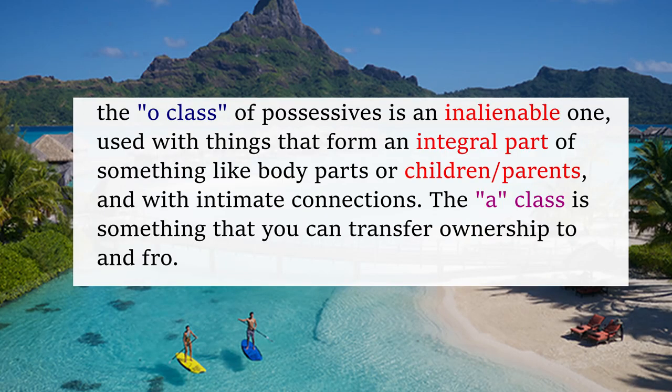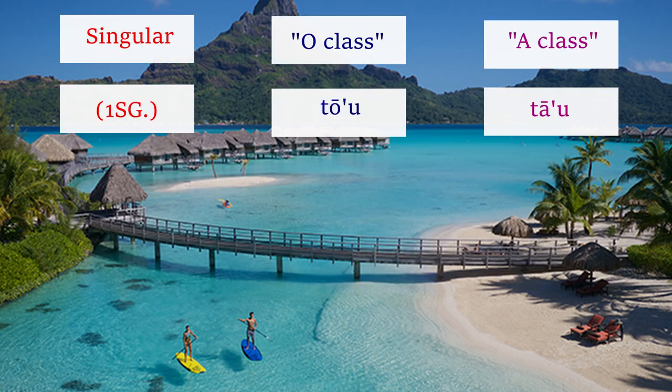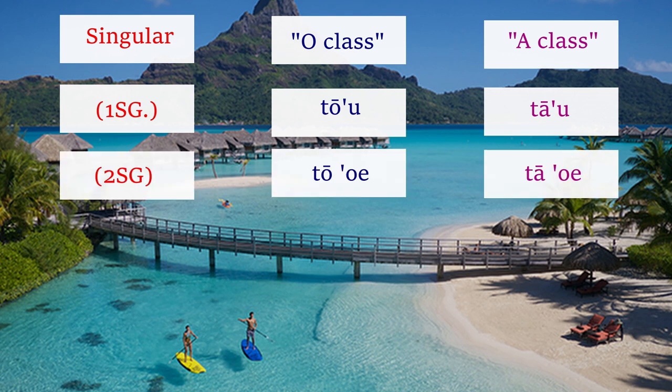Pronouns and possession. Like most Polynesian languages, Tahitian's possession and pronoun system are marked for inalienability. This is generally done in two classes: the A class and the O class. The O class is an inalienable class, and the A class is an alienable class. The O class of possessives is inalienable, meaning it is used with things that form an integral part of something, such as body parts, children and their parents, or intimate connections. The A class is alienable — something you can transfer ownership of. In the singular forms of the possessive pronouns, we have to'u, which is 'my' in the O form, and ta'u in the A form. And then to'e for 'your,' and ta'oe.